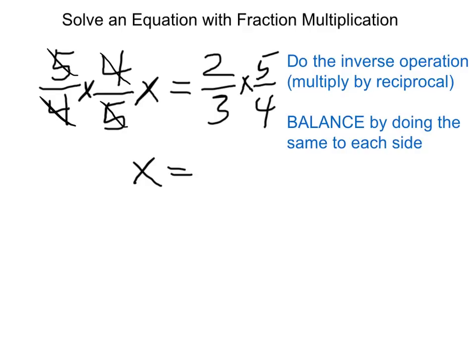On the right-hand side, I can simplify between the 2 and the 4, reducing that to a 1 and a 2. Then I do 1 times 5, which is 5, and 3 times 2, which is 6, which gives me 5 over 6 for my answer.